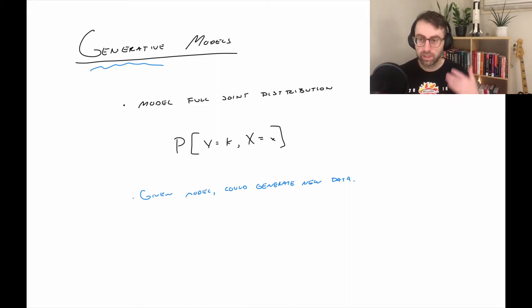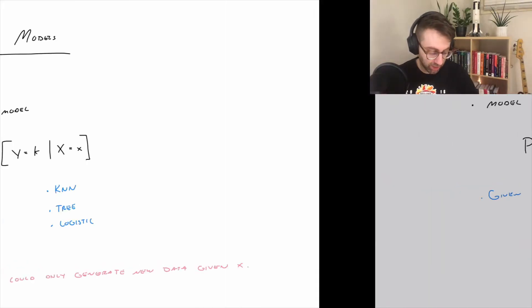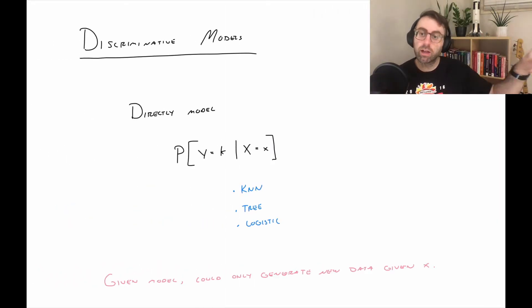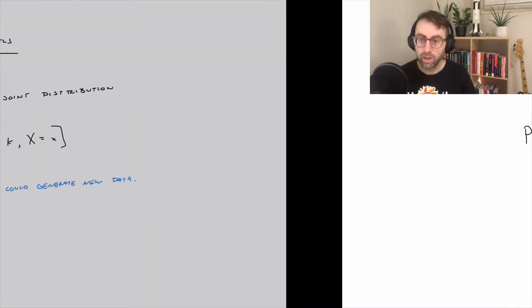So that's the big difference. Here, we're going to model the full joint distribution. Previously, we were just directly going after the conditional that we need to make classifications.